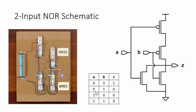When the two inputs have different values, one PMOS transistor is shut off, cutting off the power supply connection, and one NMOS transistor is turned on, forcing the output to zero.